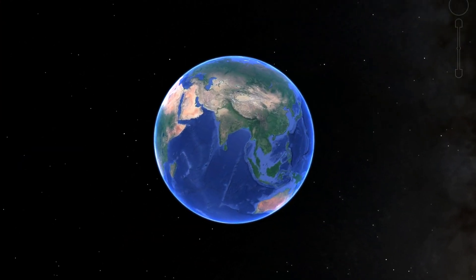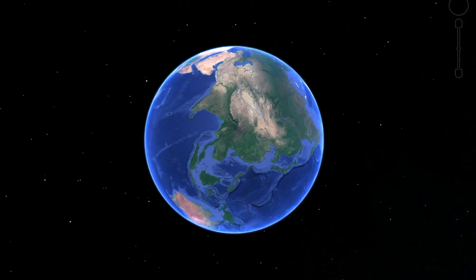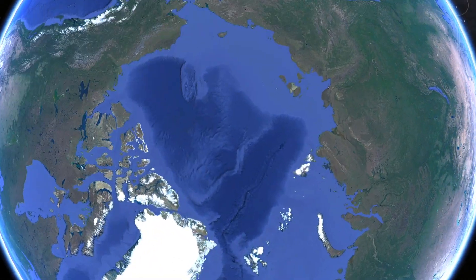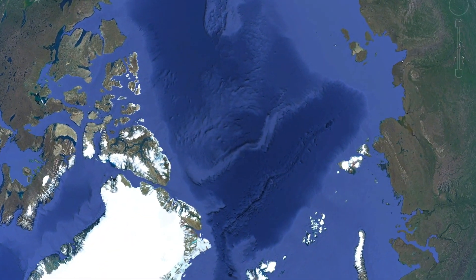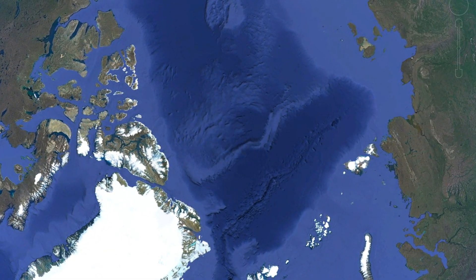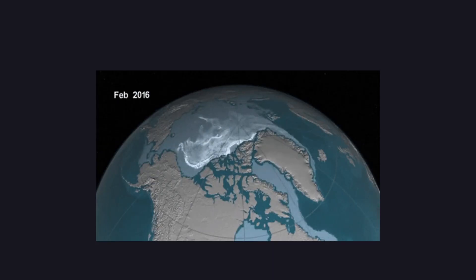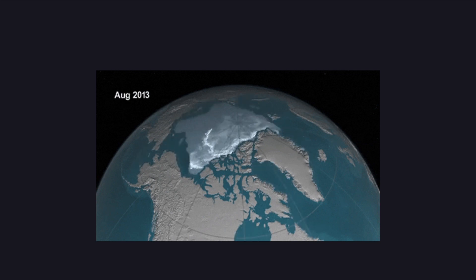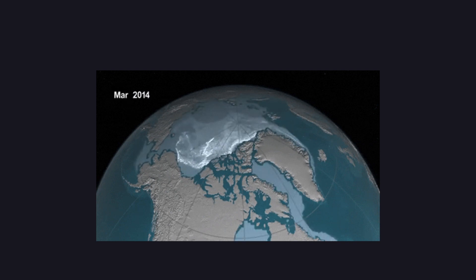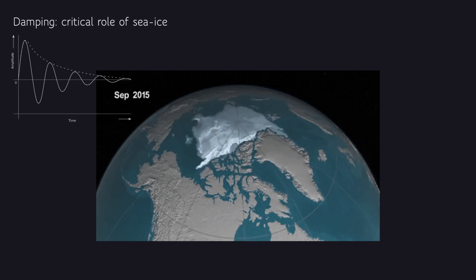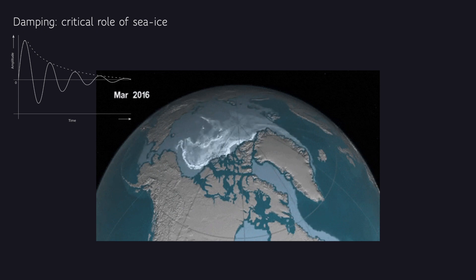We don't hear much about the Arctic Ocean, and that's because it's the smallest and shallowest of the world's five major oceans, and historically it stays pretty quiet. In the past, perennial sea ice cover covered about half of the Arctic Ocean. The extensive and thick sea ice cover helped to damp both surface and internal waves.